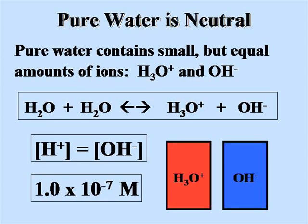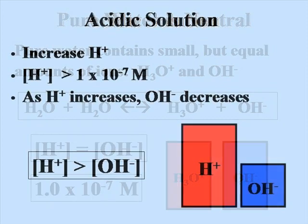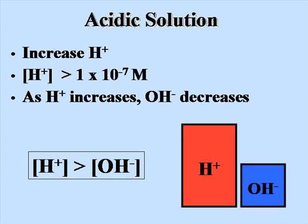Pure water is neutral because it contains very small but equal amounts of H3O+ and OH− ions. In an acidic solution, you increase the concentration of H+ — it becomes greater than 1×10⁻⁷ molar. As the H+ increases, the OH− decreases.